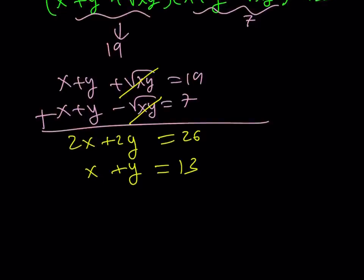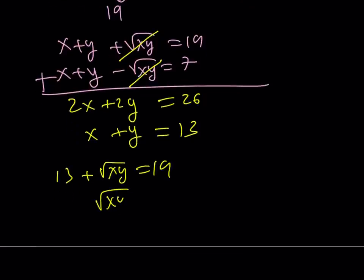And if you substitute 13 into one of these equations, it doesn't really matter, let's do the first one, then you get the following. You're going to get the same results. The square root of xy becomes 6, and by squaring both sides, you get xy is equal to 36.